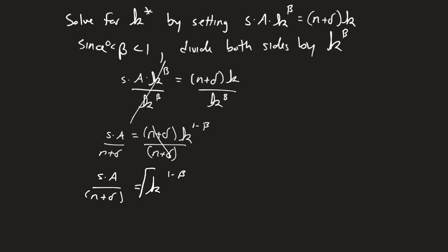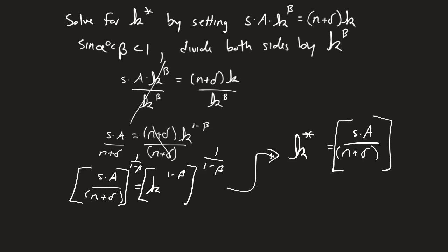And the way that we're going to get rid of this exponent, which I know we've done in class before, is we're going to raise it to the reciprocal, which means we have to do the same thing to this side, one over one minus beta. And this is going to result in our k star, now that we've solved it out, we can call it k star, is going to equal s times a over n plus delta, that whole thing raised to the one over one minus beta.